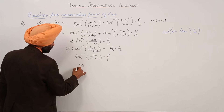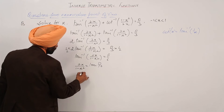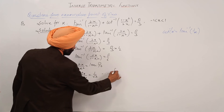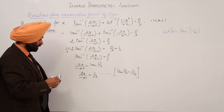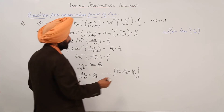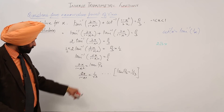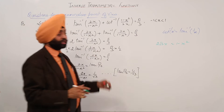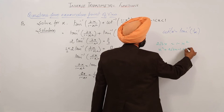Now, what is the value of tan(pi by 6)? We are having 2x upon (1 minus x square) is equal to 1 upon root 3, since tan(pi by 6) equals 1 upon root 3. Cross-multiplying, we get 2 root 3 x is equal to 1 minus x square. Now this becomes a quadratic equation: x square plus 2 root 3 x minus 1 is equal to 0.